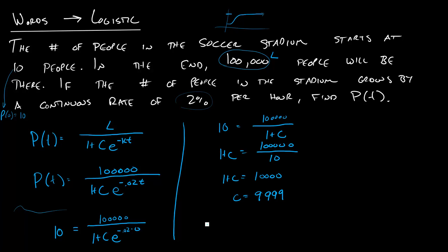So the final answer to this problem is that P of T is equal to 100,000 divided by one plus 9,999 e to the negative .02 times T. And the way we started that was by knowing that the maximum is this number on top, this growth rate is this K, and then solving for C, we just used algebra.